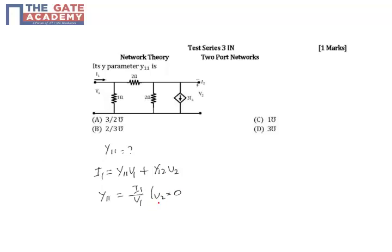To make V2 equal to 0, we have to short circuit this port. So when this is short circuited, let us analyze what happens.